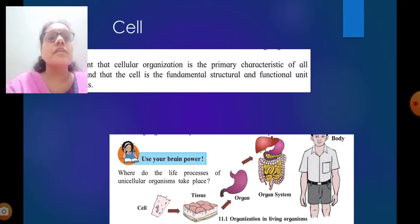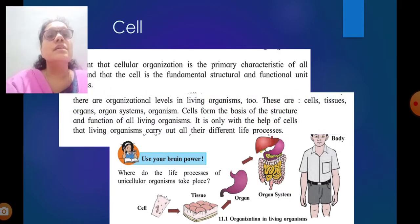What is a cell? Cellular organization is the primary characteristic of all living organisms, and the cell is the fundamental structural and functional unit of life. There are organizational levels in living organisms: cells, which is the basic one, then many cells combine together to form tissues, many tissues join to give an organ, then organs combine to form an organ system, and many organ systems will be there in an organism.